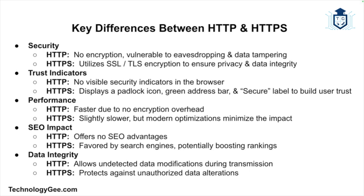Let's go over some of the key differences between HTTP and HTTPS. When it comes to security, HTTP does not provide encryption, making it vulnerable to eavesdropping and data tampering, whereas HTTPS uses SSL and TLS to encrypt data, ensuring privacy and integrity during transmission. For trust indicators, HTTP has no visual indicators of security in the browser, while HTTPS displays security indicators like a padlock icon, green address bar, and the word 'secure,' enhancing user trust. Regarding performance, HTTP is generally faster as it does not involve the overhead of encryption.